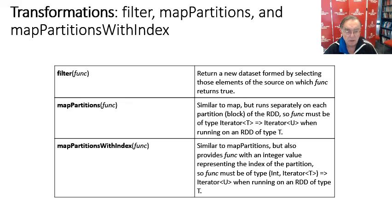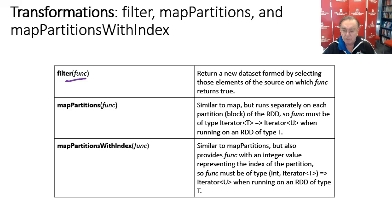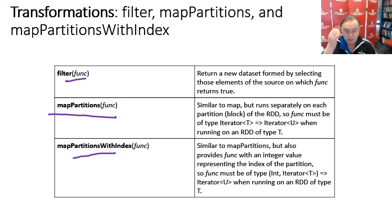Filter is a function which filters the original data set by telling you which elements some test is true for, and which elements some test is false for. We also have map with partitions, and map partitions with index gives you a flag to tell you which partition produced the answer.